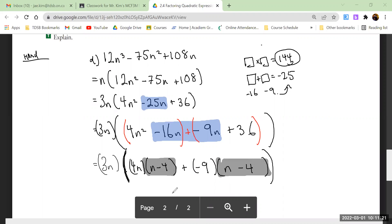So the answer is 3n(4n - 9)(n - 4). Those big brackets don't serve a purpose - it's just there because we had it before. That is hard.